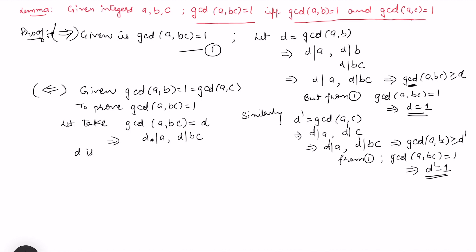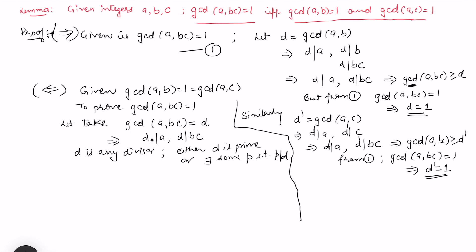Of course we know that d must have a prime divisor. Either d itself is prime, or there exists some prime p such that p divides d. So this implies p divides d, which implies p divides a and p divides bc. Now since p divides bc and p is prime, we can apply Euclid's lemma.